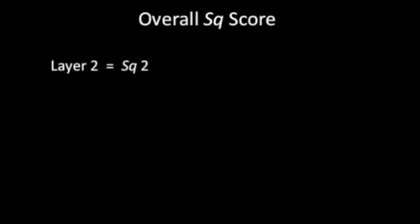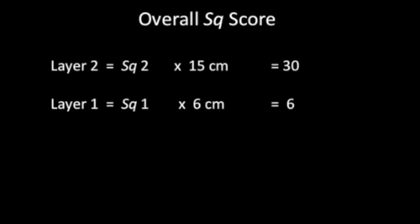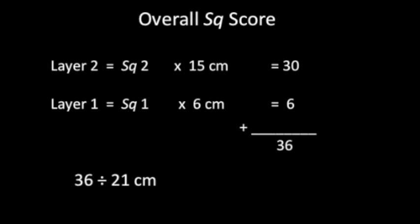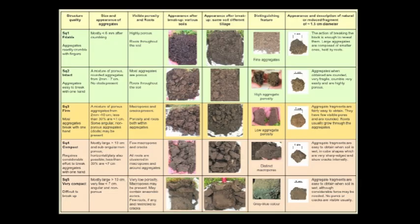To obtain the final overall SQ score, the SQ score for each layer is multiplied by the depth of that layer. In this case, layer 2 with a score of SQ2 is multiplied by the layer depth of 15 cm, giving a layer score of 30. The same is done for the first layer. Both layer scores are then added together, giving a score of 36 in this case. This figure is then divided by the total depth of the sample block, giving an overall SQ score of 1.7. This score indicates that this particular soil is of good structural quality, as indicated by the green band on the score sheet.